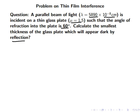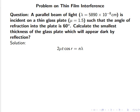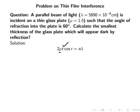In this problem, we basically calculate the thickness of this glass plate which will appear dark by reflection. The condition of dark we have already discussed, that is 2μt cos r = nλ. In this equation, μ is our refractive index, t is the thickness of this glass plate, r is the angle of refraction, λ is the wavelength, and n is the order of fringe.